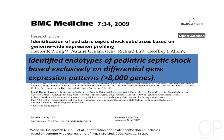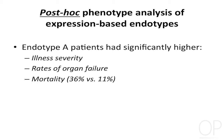In the initial iteration, we identified endotypes of septic shock based on expression patterns of over 8,000 genes. Using clustering algorithms completely agnostic to patient outcomes or characteristics, patients were clustered based on similarity or dissimilarity of gene expression. Post hoc, we found that endotype A patients have much higher illness severity, greater organ failure burden, and a mortality rate about threefold that of the other group — 36% versus 11%.